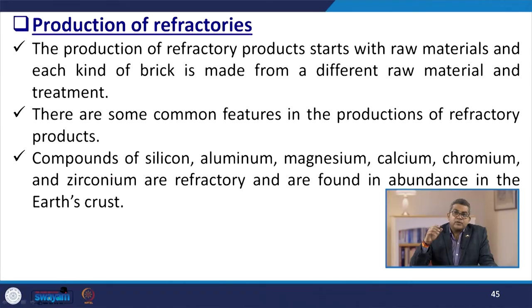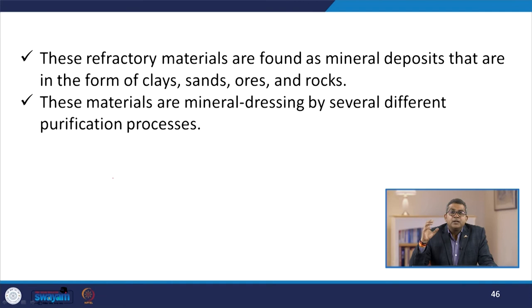The production of refractory products starts with raw material — each kind of brick is made from different raw material and treatment. The compounds of silicon, aluminium, magnesium, calcium, chromium, and zirconium are refractory and are found in abundance in the earth's crust. These refractory materials are found as mineral deposits in the form of clay, sand, ores, and rocks, and are refined by several different purification processes.